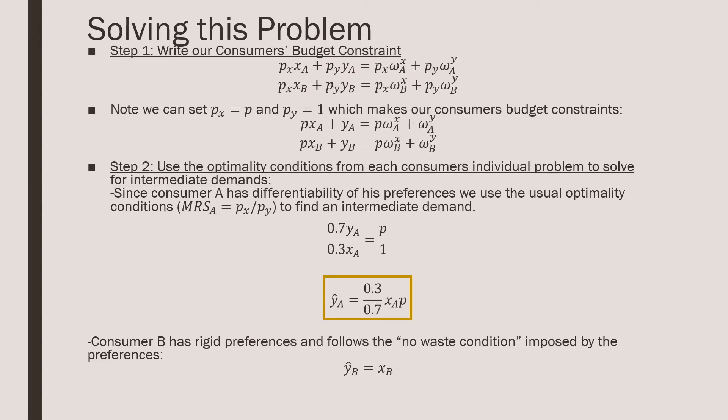Let's see how they trade. So to figure that out, first we're going to write the budget constraint, and this is important because we're going to be talking about prices. Note that we can set px equal to p and py equal to one. This is a normalization process which makes our budget constraints as follows.